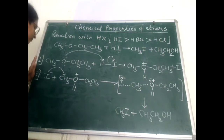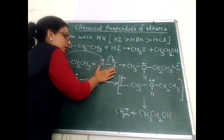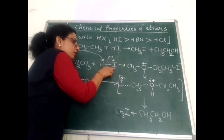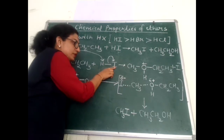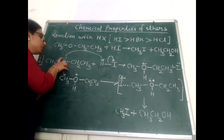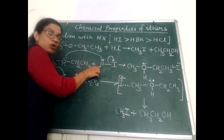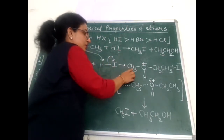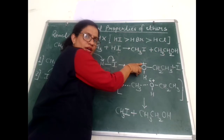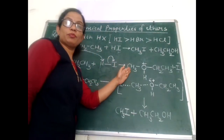Let us see the mechanism. When unsymmetrical ethers react with a molecule of hydrogen halide, the electrons of the H-X bond are shifted towards the halogen atom due to its greater electronegativity, making hydrogen electron deficient. The oxygen atom of the ether, due to its lone pair, is electron rich and attacks this electron deficient hydrogen. After the reaction, the oxygen atom of ether is now bonded to this hydrogen, oxygen carries a positive charge, and the iodide ion is released. This is the first step — ether is converted into protonated ether.